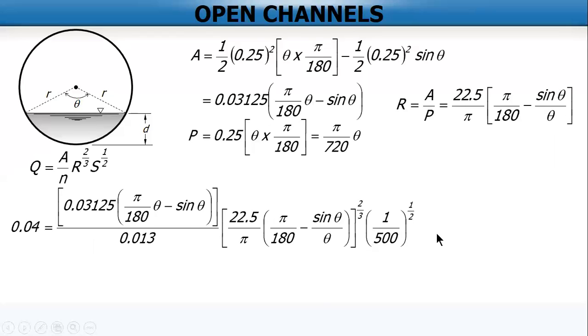Now, the only way to solve this is by trial and error. But with your calculator capable of solving this, the value is equal to 140.55. Shift solve, and the value is 140.55 degrees. So after this, we can now solve for d. Now from the figure, we have theta.